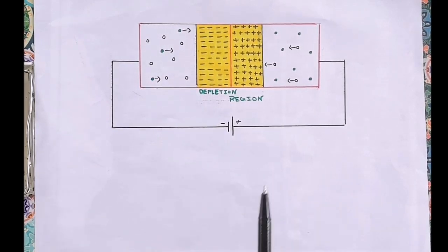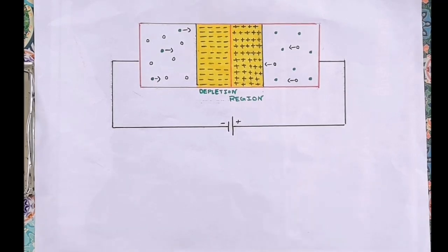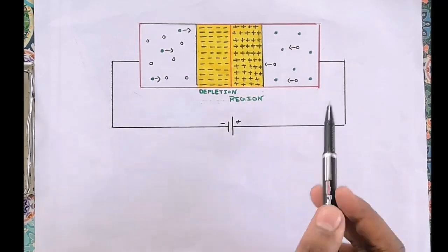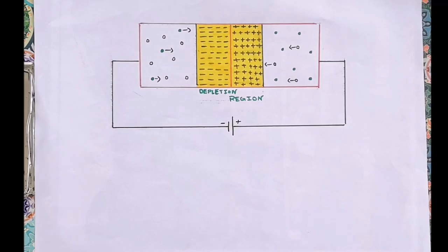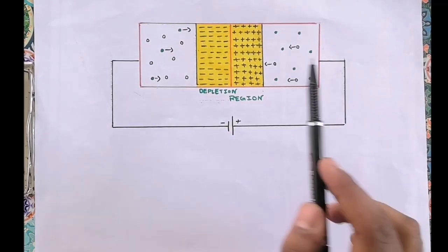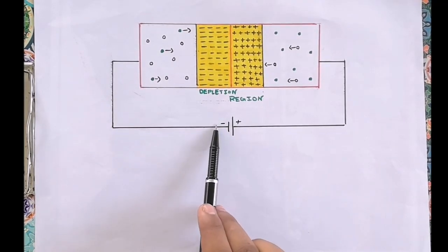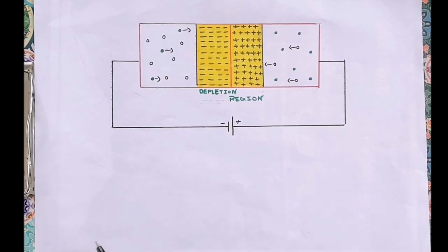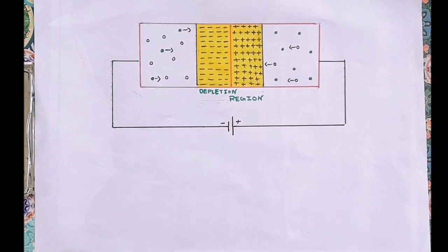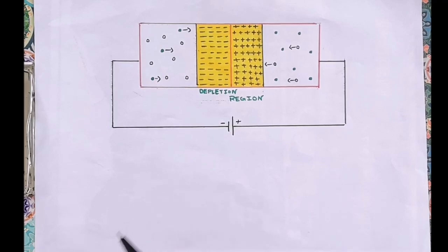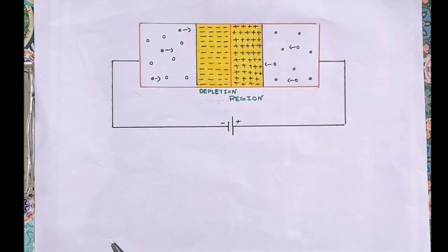In practice, a very small current in the order of a few microamperes flows in the p-n junction diode under reverse bias, due to minority charge carriers. Holes are minority charge carriers in the n-region and electrons are minority charge carriers in the p-region. These minority carriers are attracted towards the junction by the battery terminals, constituting a very small current. Since the number of minority carriers is very small, this current is negligible and we can consider no current flows under reverse bias.